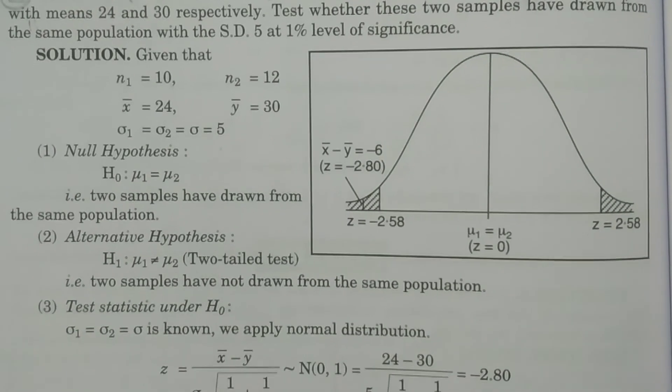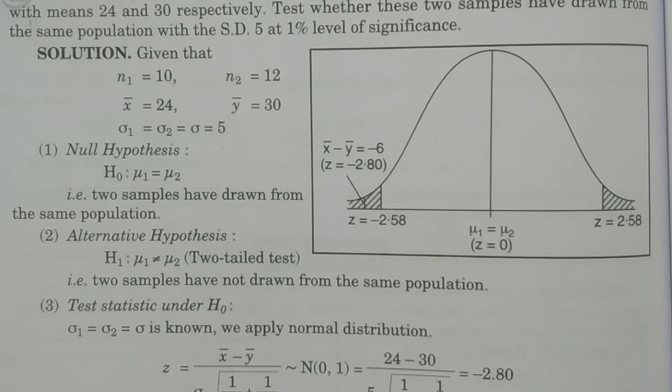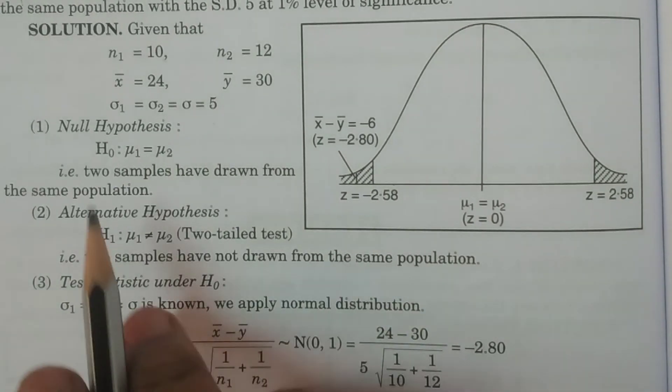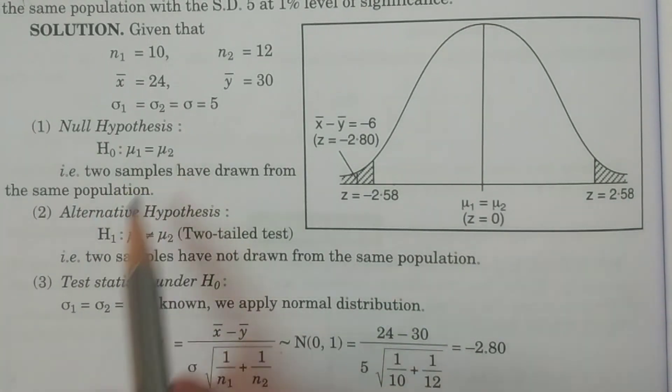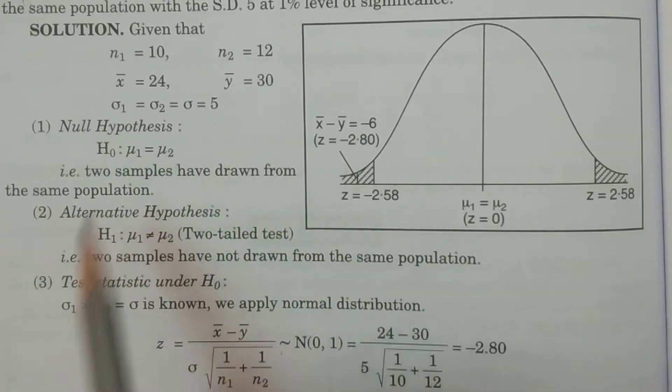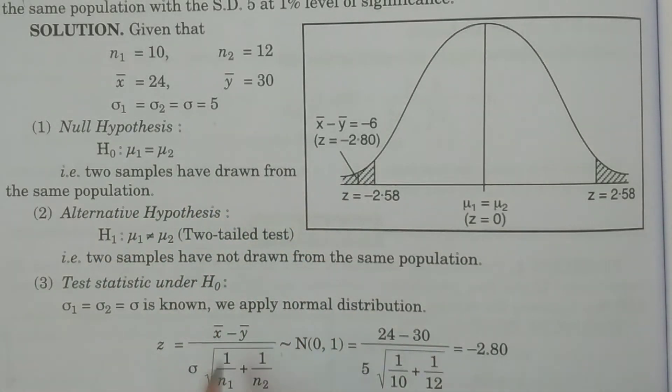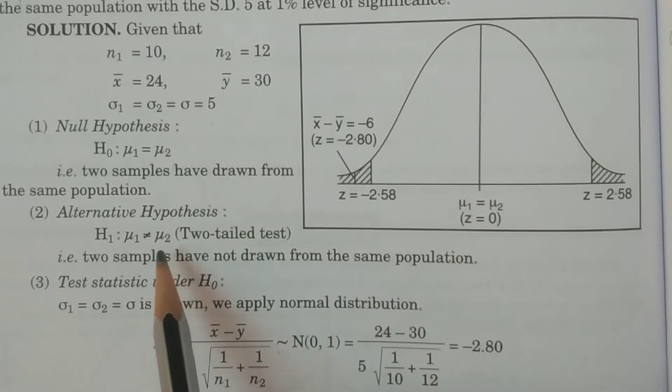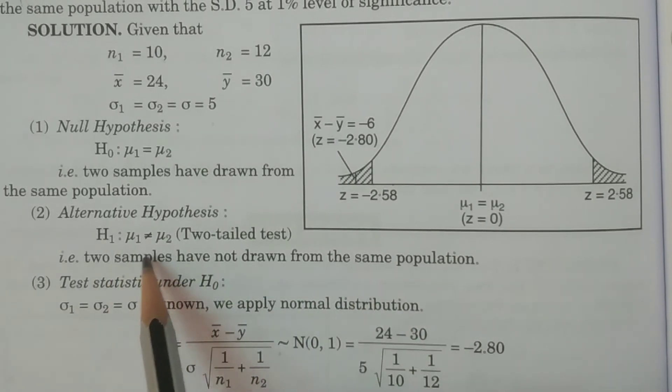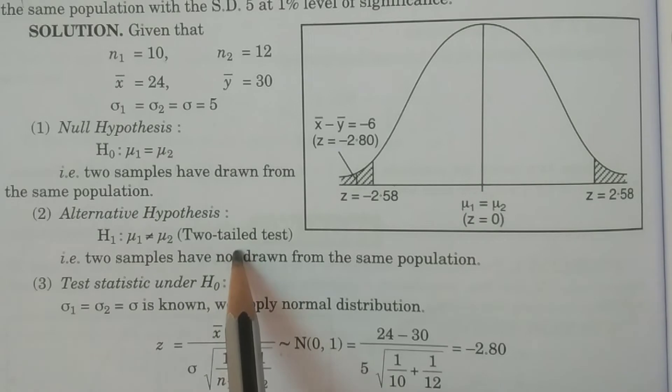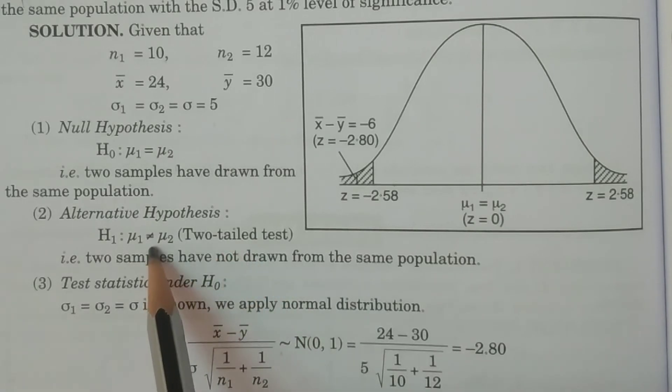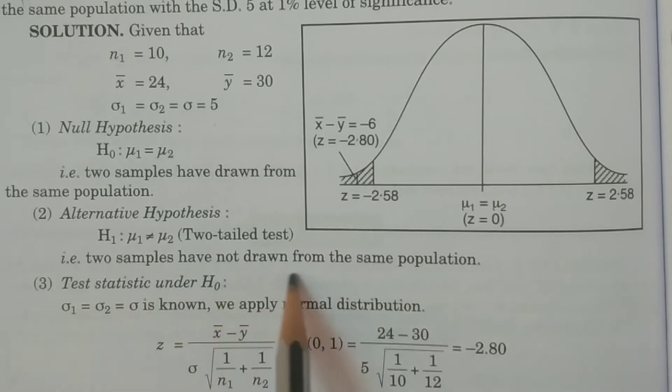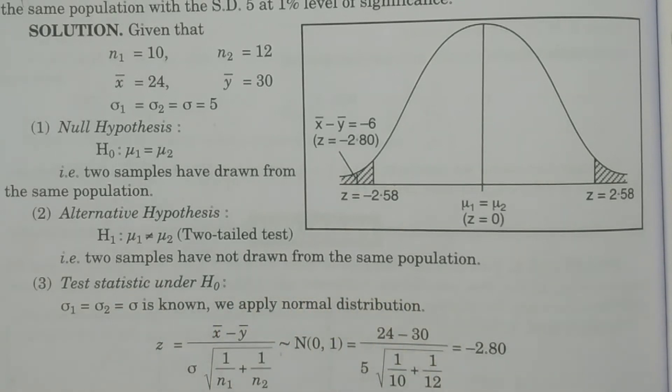I am starting the four points. I am starting the null hypothesis H0: mu1 equals mu2. The two samples have drawn from the same population. That is the null hypothesis. No, it is not drawn from the same population is the alternative. That is H1: mu1 is not equal to mu2. That is two-tailed test because not equal to alternative hypothesis. Hence, it is two-tailed test. That is two samples have not drawn from the same population.